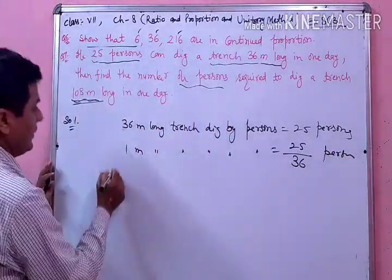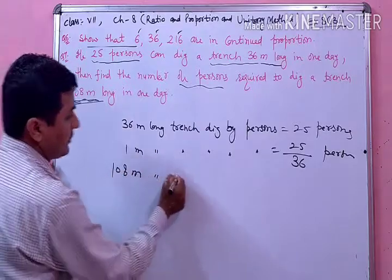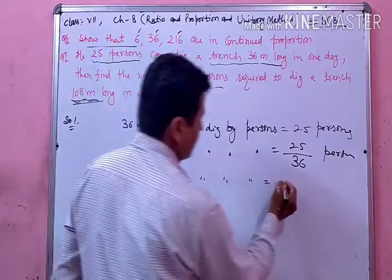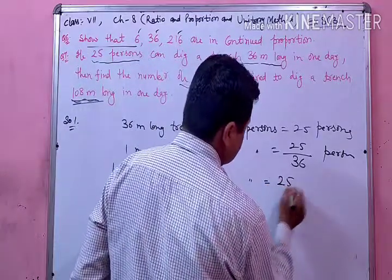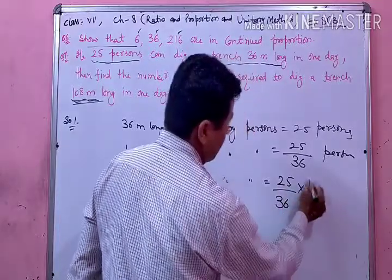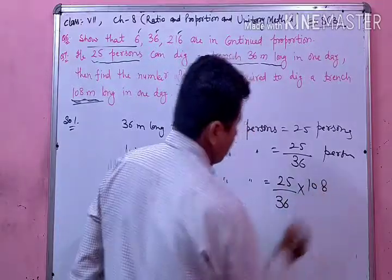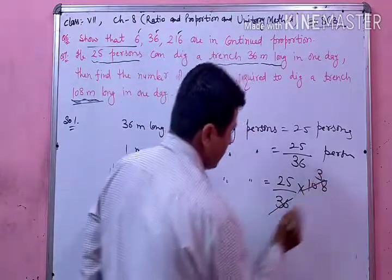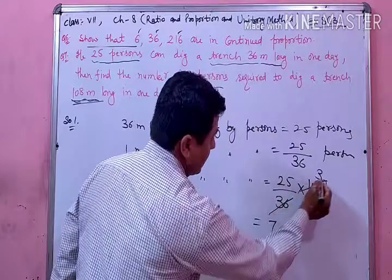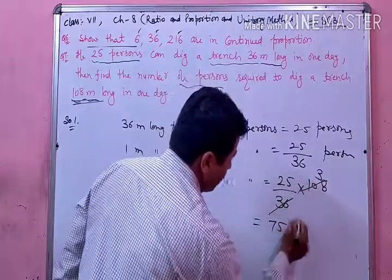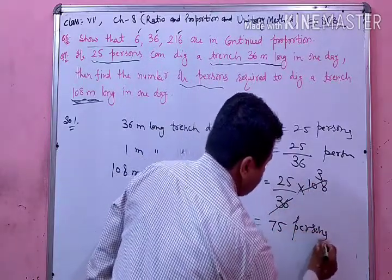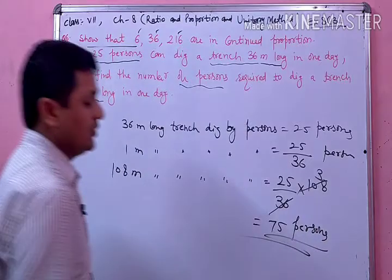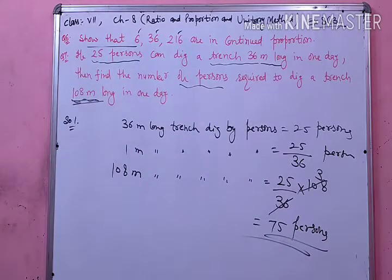अब 108 meter long trench को कितने persons dig करेंगे — multiply कर देंगे 108 से। अब यहां 3 की table पर cut हो रहा है। तो यह हो जाएगा 25 × 3 = 75. तो जो required persons हैं वो होंगे 75. ठीक है, अब देखिए इसके बाद question number 8.